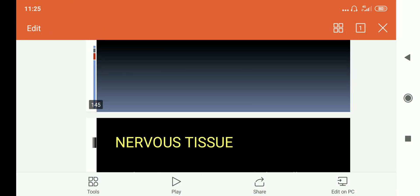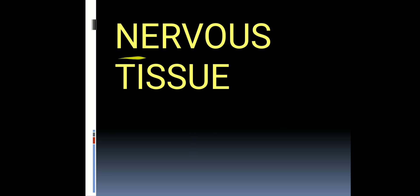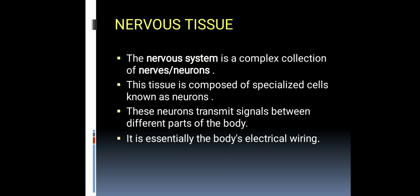Good morning students. Today we have to discuss the last type of animal tissue, which is nervous tissue. This tissue is known as nervous tissue because it is made up of a special cell known as a nerve or neuron. The nervous system is a complex collection of nerves or neurons, and the structural and functional unit of nervous tissue is the nerve or neuron.